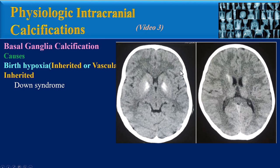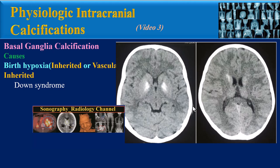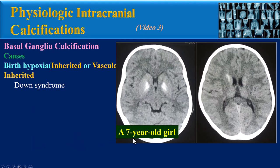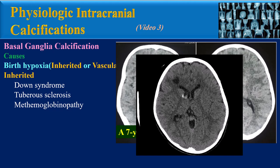Another inherited cause is Down syndrome. Down syndrome is not recognized as a common cause of intracranial calcification, even though it is a common finding on head CT, noted in about 11 to 27% of Down syndrome cases. Calcifications predominantly involve the basal ganglia, with the globus pallidus being the most commonly affected structure. These axial CT images relate to a seven-year-old girl with Down syndrome showing symmetrical hyperdensities involving bilateral globus pallidi.